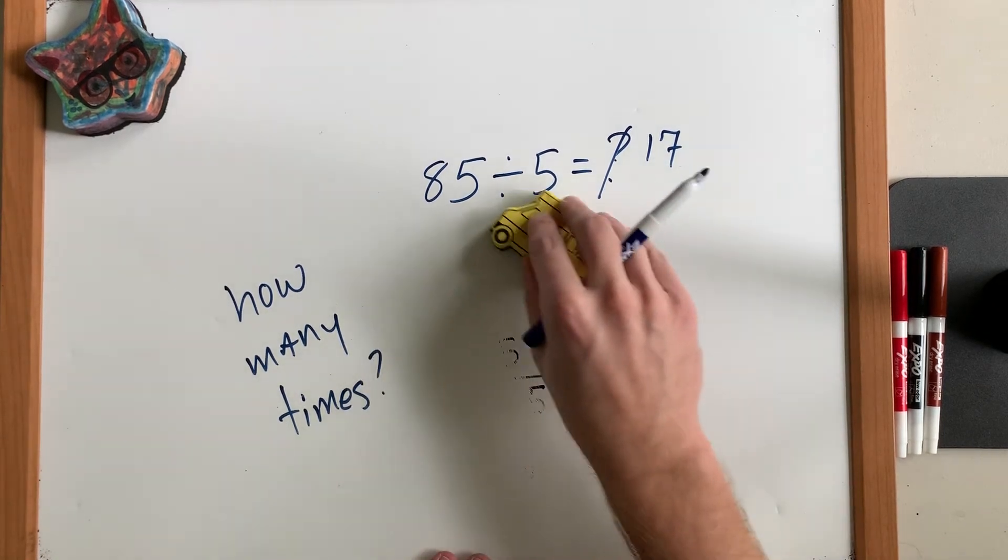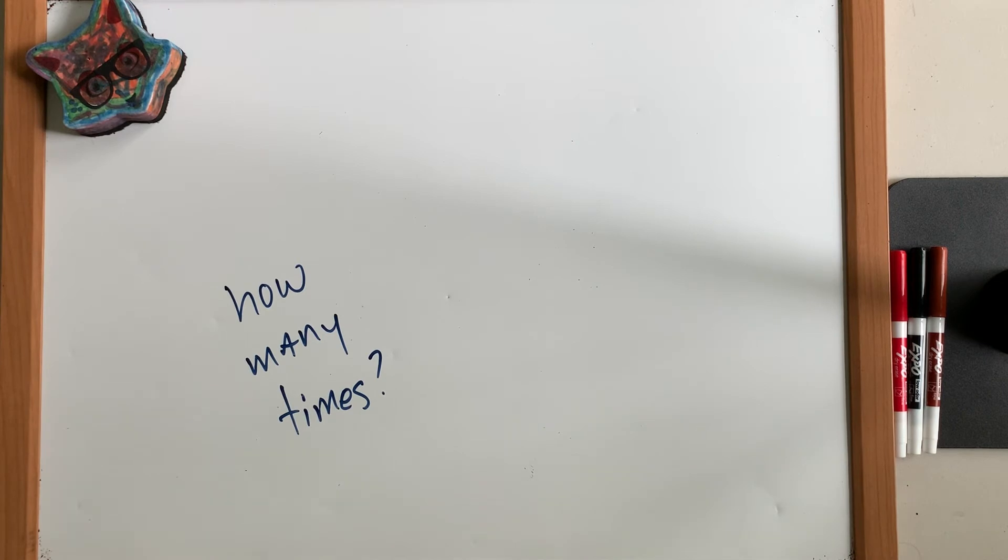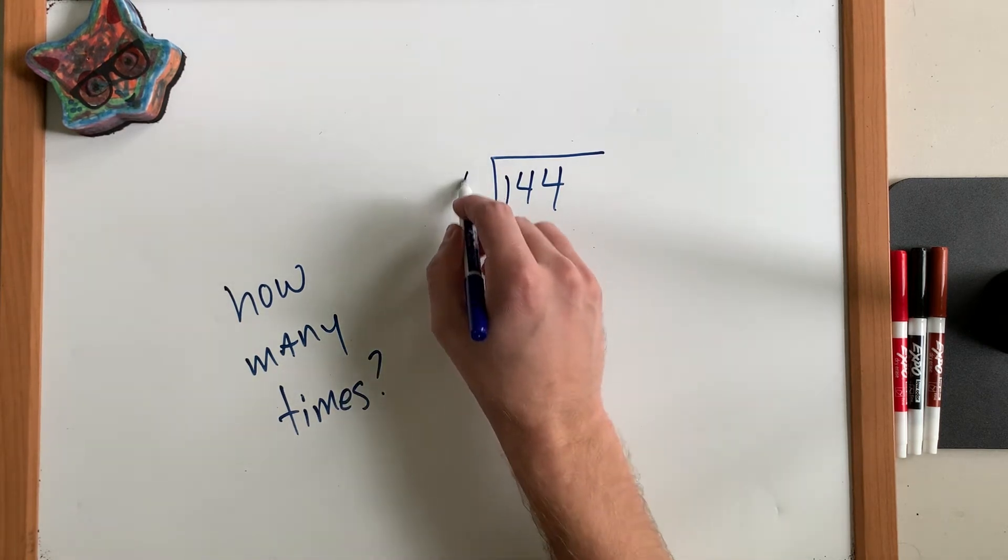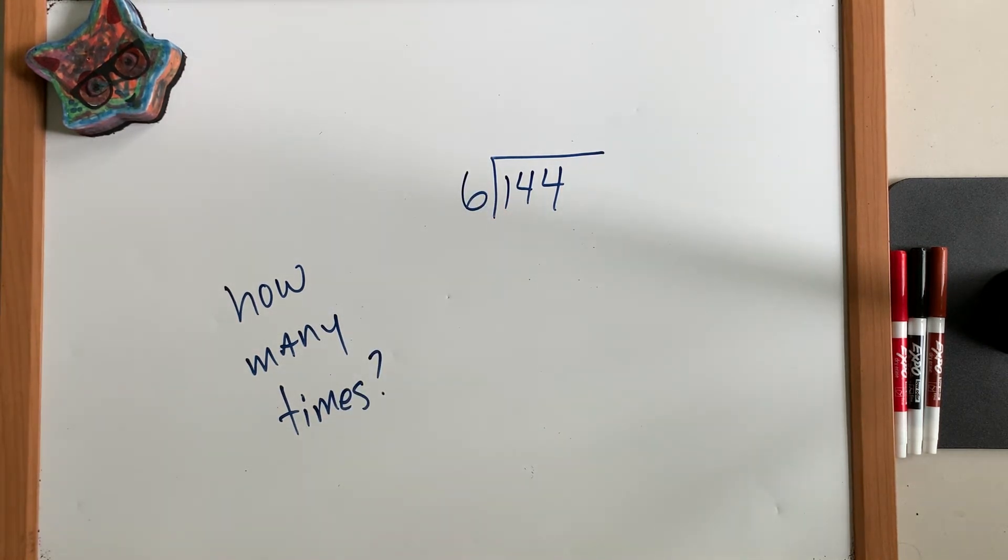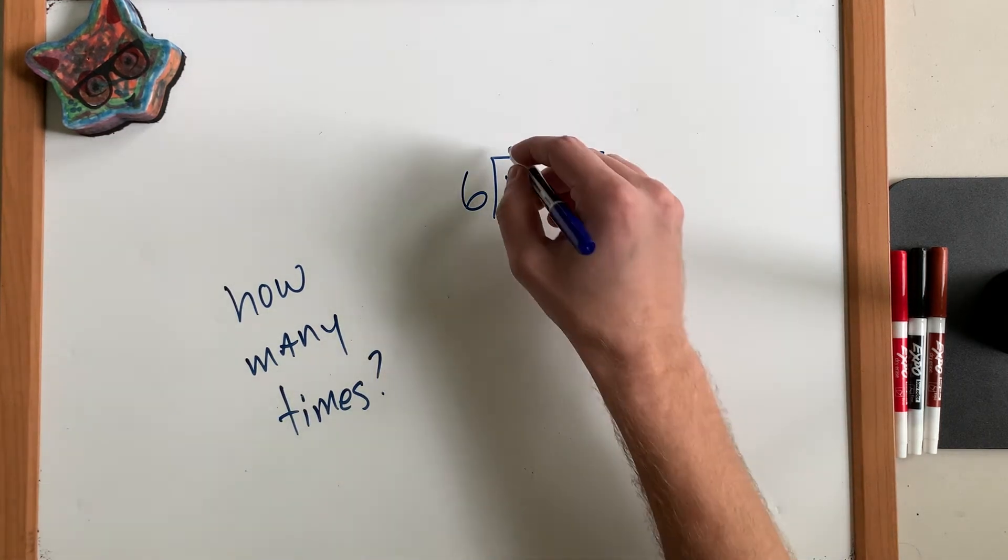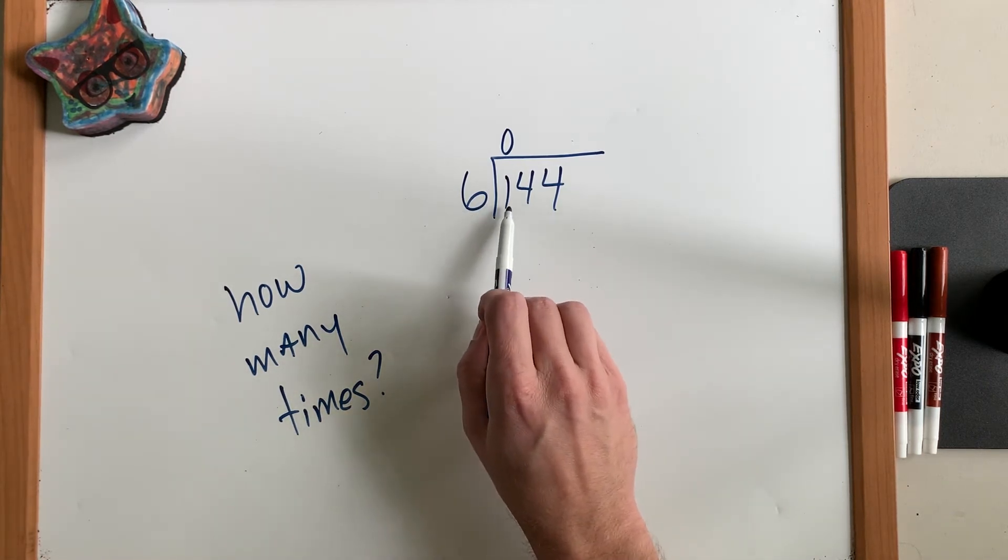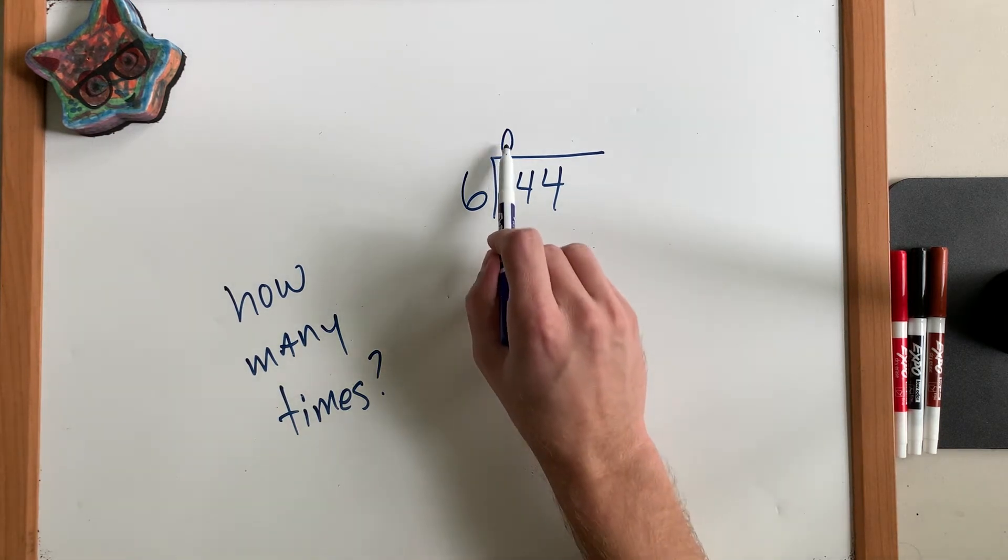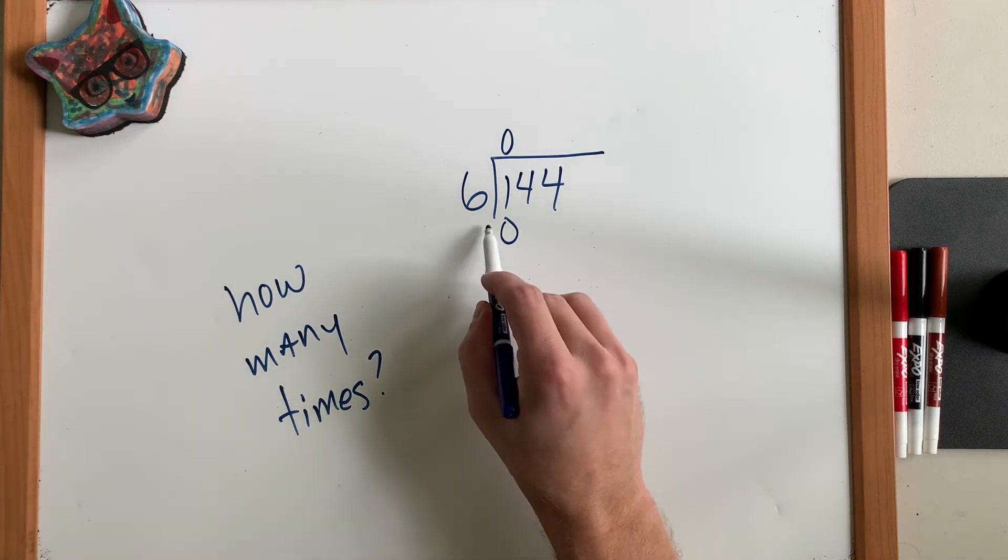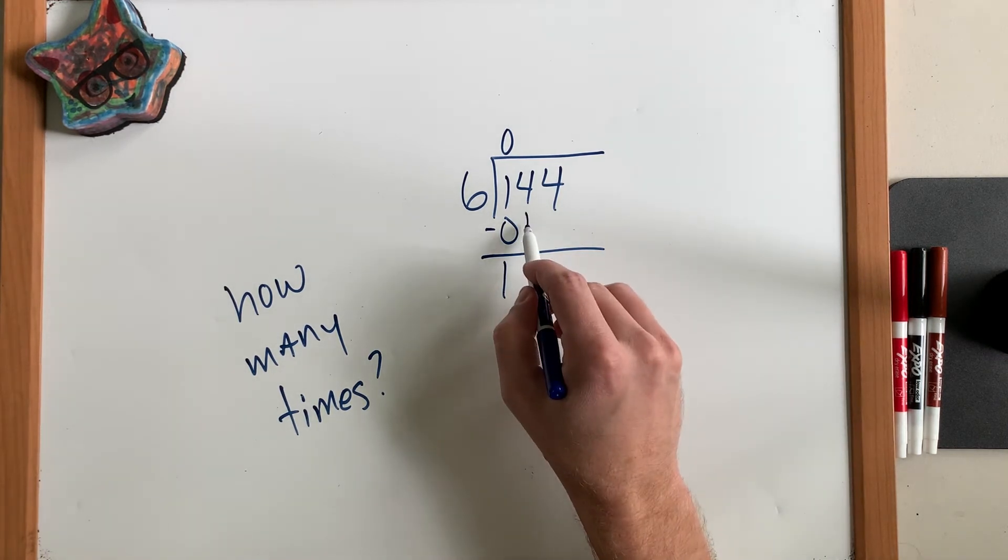Let's go ahead and look at another example that has numbers a little bit bigger. Let's take 144 and we're going to divide it by 6. Let's ask the same question. How many times can 6 fit into 1? Well, it doesn't. 6 doesn't fit into 1. If you had 6 gallons of water, you can't fit it into a 1-gallon bucket. So we put a 0 and we multiply. 6 times 0 is 0. And we subtract. And 1 minus 0 is 1. And we bring down the next number.